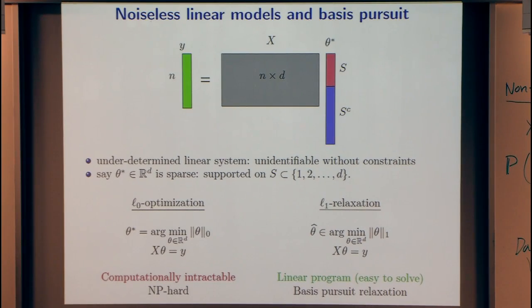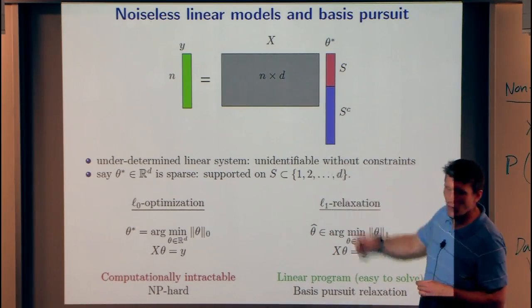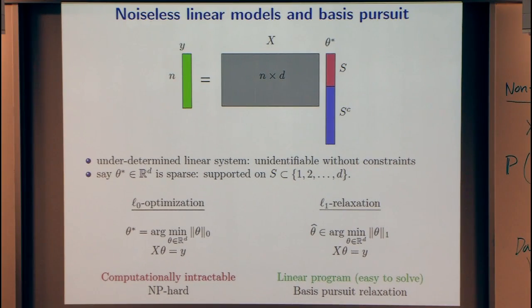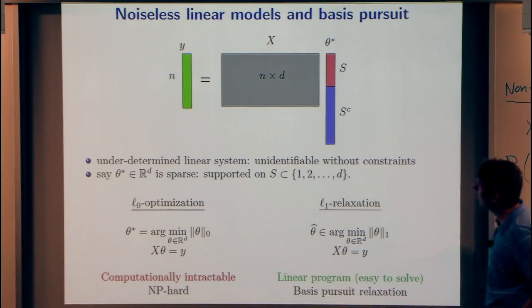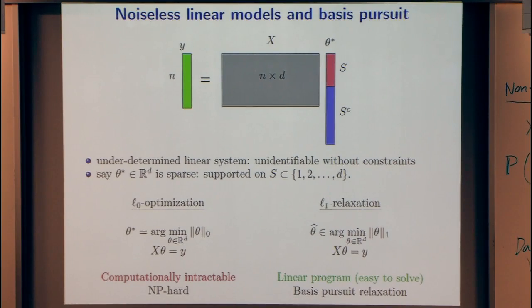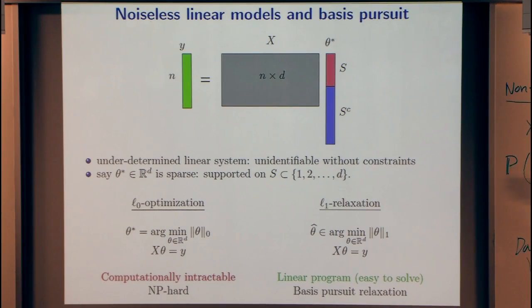Just a remark on notation: Ben was using signal processing notation where M is the number of samples and N is the dimension. Statisticians always use N for the number of samples — it's very confusing not to. So I'm going to use N and D will be the dimension. The simple model is: you observe an N-vector, you have a design matrix X that you know (it's N by D), and there's an unknown vector theta-star that's S-sparse — supported on an unknown subset of coefficients.